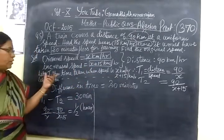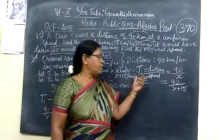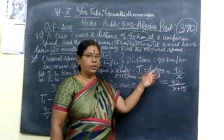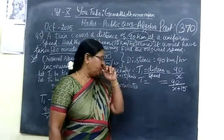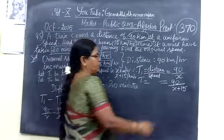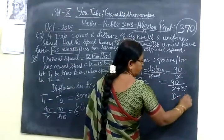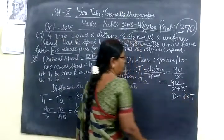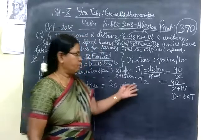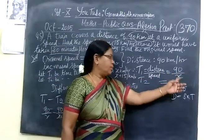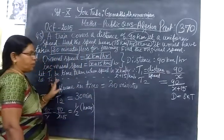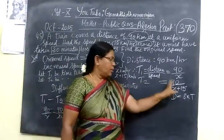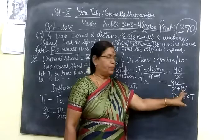Let T1 be the time taken. Time equals distance by speed. We know the formula: distance equals speed into time, or time equals distance by speed. Distance is 90, then speed will be x km per hour. As the speed is increasing, T2 will be 90 by x plus 15.